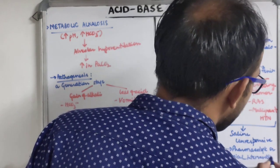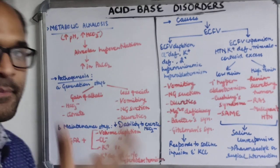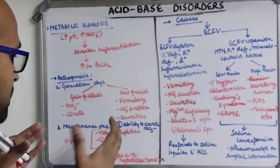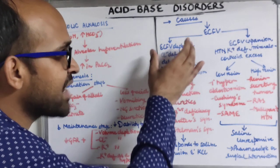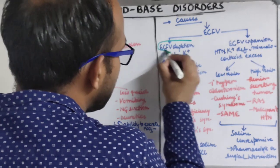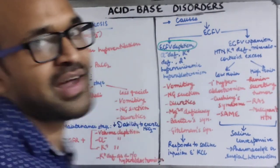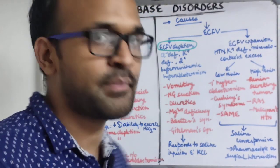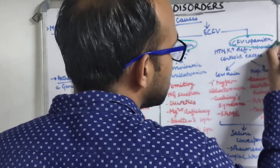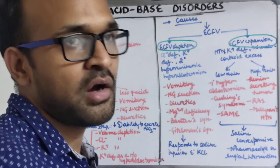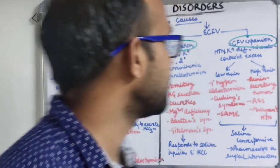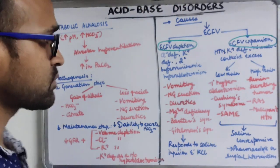For treatment: in the generation stage, PPIs can be given for vomiting, or diuretics can be discontinued. For the maintenance stage, if there is ECF volume depletion, give isotonic saline — that is the key treatment. Supplement potassium if there is potassium deficiency. If there is hypertension and ECF expansion, evaluate renin and aldosterone levels and treat primary hyperaldosteronism or Cushing syndrome accordingly.